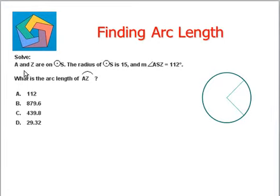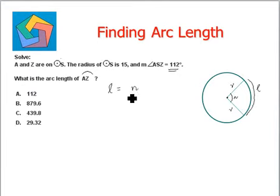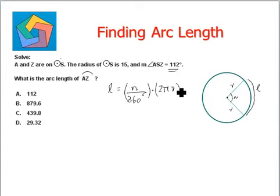Points A and Z are on a circle with center S. The radius of the circle is 15 and the measure of angle ASZ equals 112 degrees. To calculate arc length, consider a circle with center, two radii forming a central angle N, and an arc L. The arc length formula is: L = (N / 360°) × 2πR, where N is the central angle, R is the radius, and π equals 3.14159. If all values are given, we just plug them into the formula.